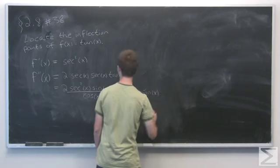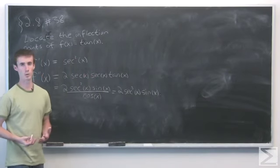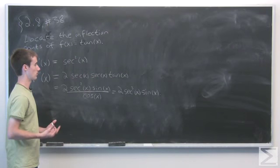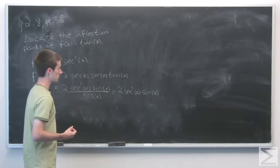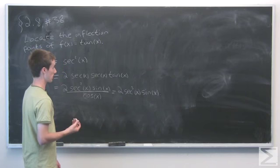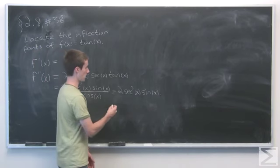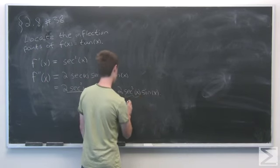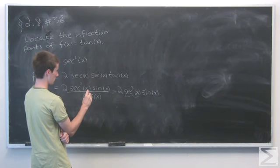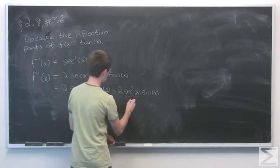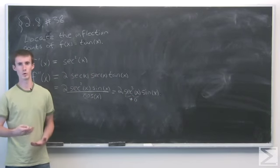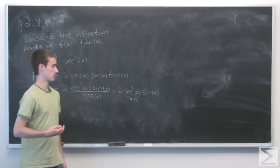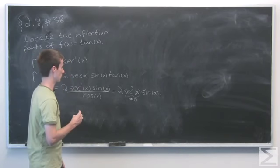And now we want to look at the points where this is either undefined or equal to 0. And we see that secant does not equal 0 at any point since it's 1 over cosine of x. The fraction cannot attain 0 at any point.